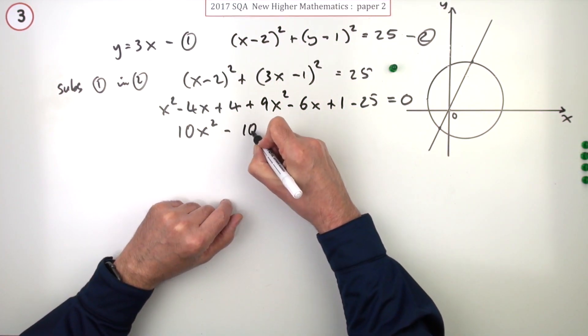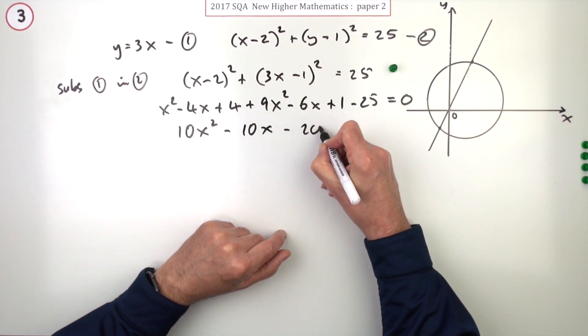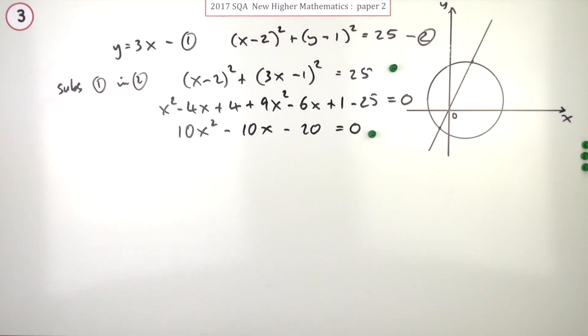There you go: minus 10x minus 20. It couldn't look nicer. Arriving at that gets the next mark.